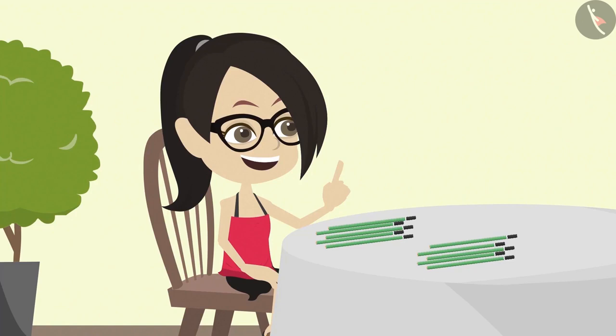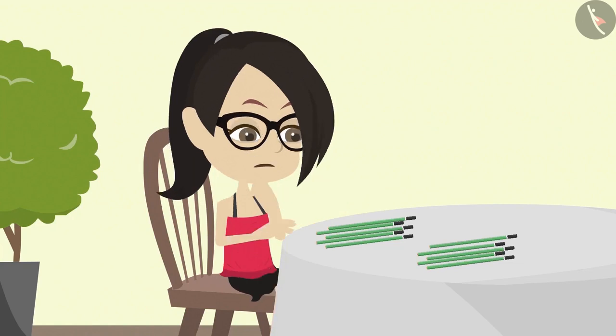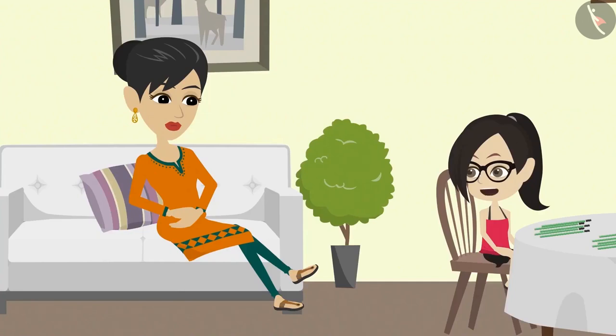Vandana has understood that she can divide and distribute things. But she still does not understand one thing. Mummy, when you can equally distribute the pencils one by one, then what is the need to divide it?